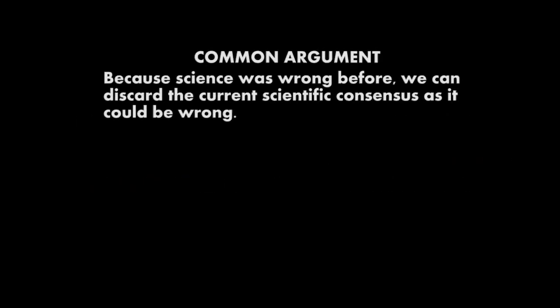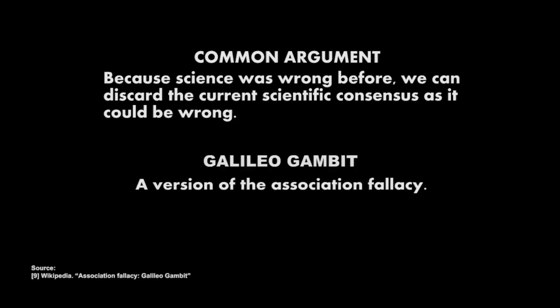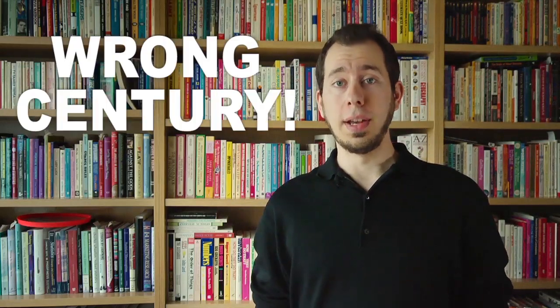Sometimes we hear the argument that because science was wrong before, we can discard the current scientific consensus as it could be wrong. The cases of Galileo or Ignaz Semmelweis are usually brought up to draw some sort of comparison about how scientists who try to threaten the establishment have been suppressed or subverted in their attempts to update the scientific paradigm. This is often known as the Galileo Gambit, a version of the association fallacy. There are a number of responses to these rather poor comparisons — firstly, two words: wrong century.